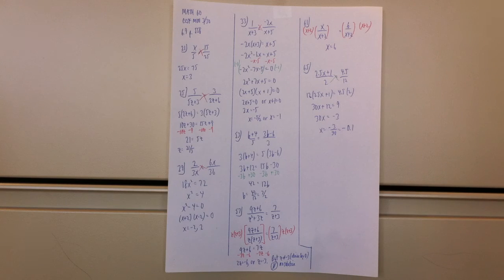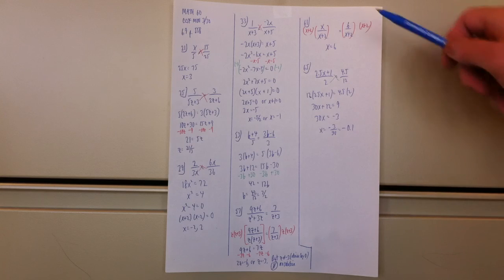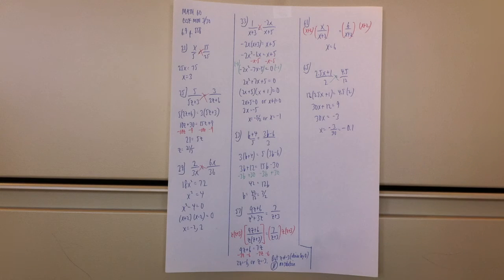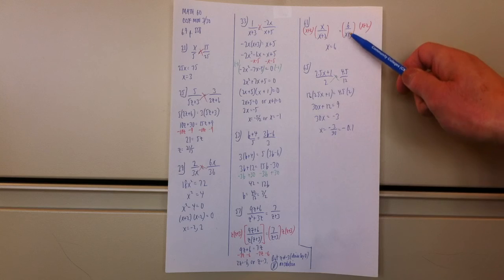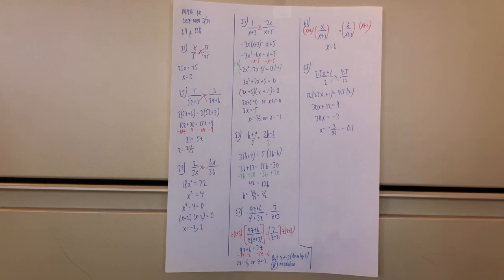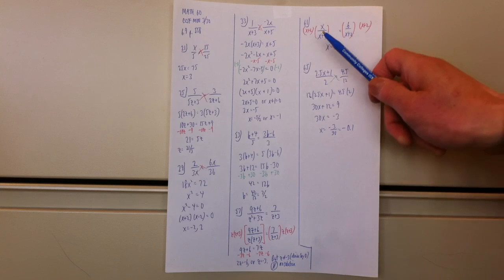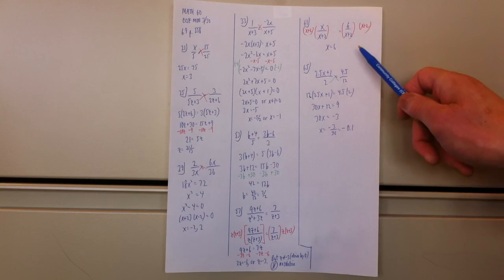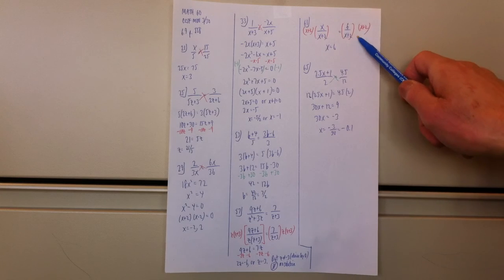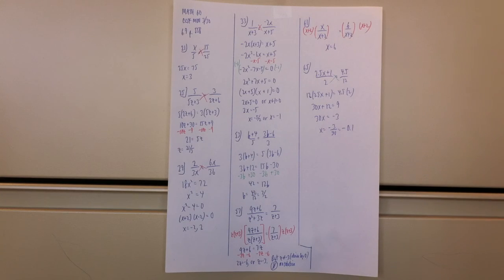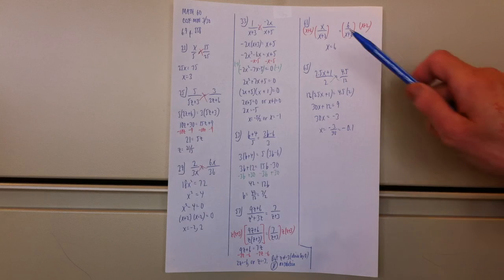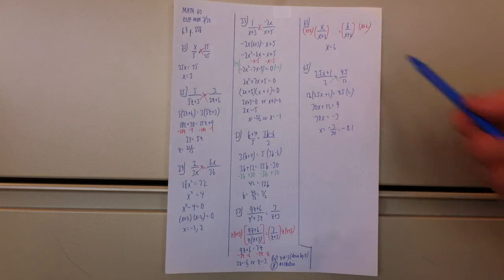Problem 61: x over (x + 2) equals 6 over (x + 2). You could cross multiply, but it's easier to just multiply both sides by (x + 2): that cancels on both sides and you get x = 6. A quick check: plugging 6 back in doesn't give 0 in the denominator, so x = 6 is a legitimate solution.